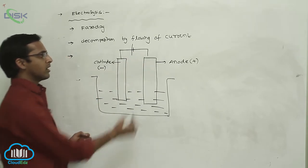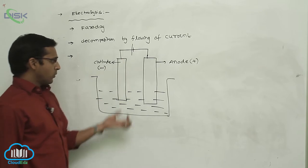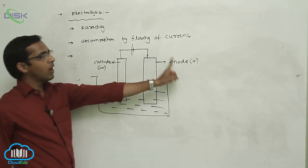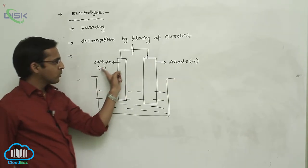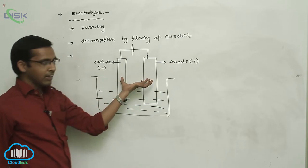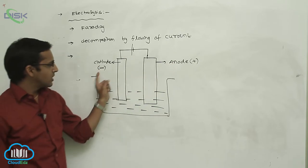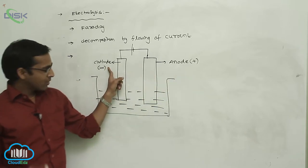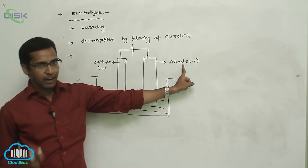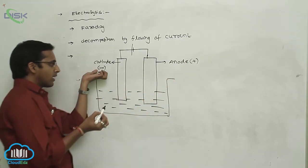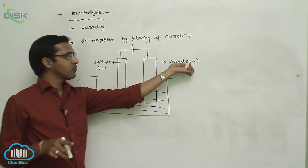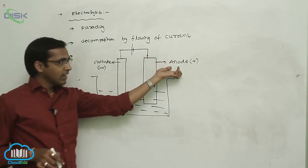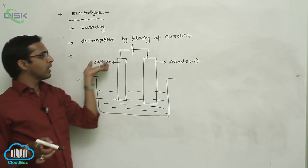These two electrodes are connected to a battery. The current flows from cathode to anode. The battery consists of two poles: one is the negative pole, called cathode, and the other is the positive pole, called anode. The current flows from cathode to anode, but the conventional direction is anode to cathode. This means electrical energy is converted to chemical energy.